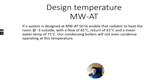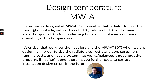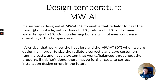If the system is designed at a mean water to air temperature of 50 to heat the room at minus 3 outside — with a flow of 81°C, a return of 61°C, and a mean water temperature of 71°C — our condensing boilers will not even condense operating at those temperatures. It's critical that we know the heat loss and the mean water to air temperature when designing, in order to size radiators correctly, save the customer running costs, and have a balanced system throughout the property. If this isn't done there may be further costs to correct installation design errors in the future — as basic as wanting to change a radiator can instantly create an imbalance.